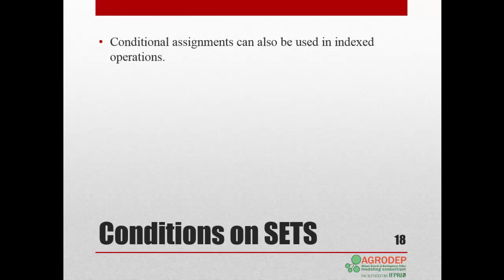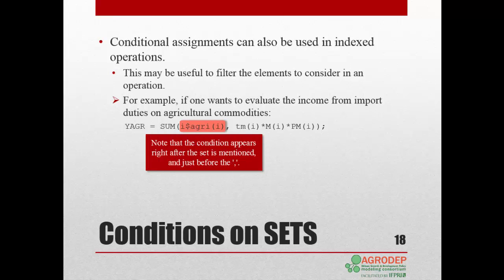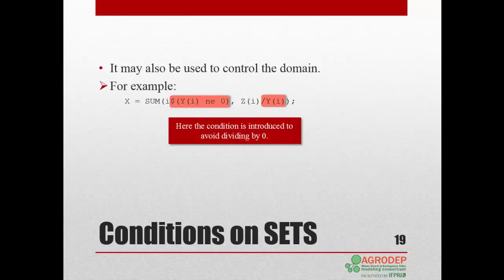Conditional assignments can also be used in indexed operations. This may be useful to filter the elements of a set to consider in an operation. For example, you may want to calculate the income from import duties on agricultural commodities. This is expressed by attaching a dollar condition on the main set I to which the sum operator applies. Note the condition is set right after the set name and before the comma. The dollar condition may also be used to control the domain in indexed operations, for example where the condition is introduced to avoid a division by zero.